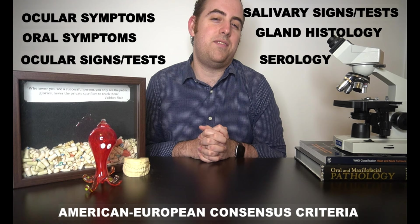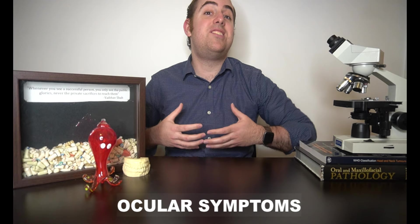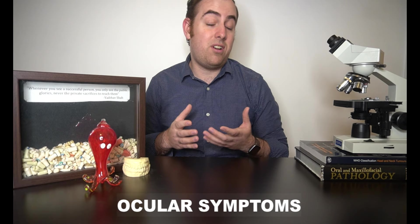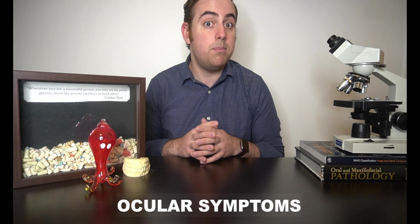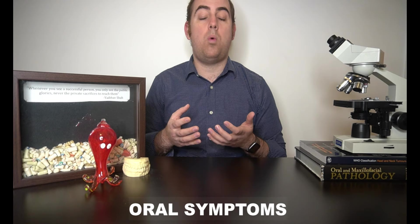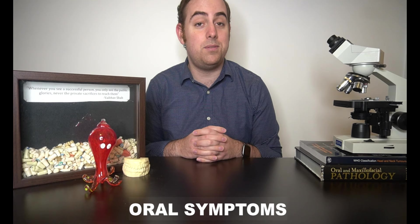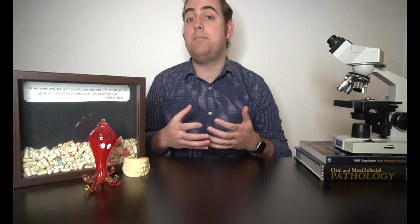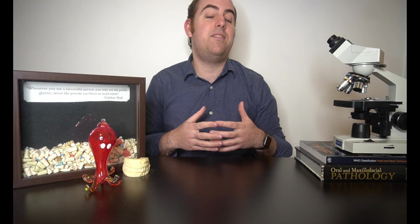The first category is ocular symptoms which is a subjective finding where the patient is describing their experience. Do the patients feel that their eyes have been dry for more than three months or have they used excessive amounts of tear substitutes? The second category is very similar but it is oral subjective symptoms. Similarly, has the patient had a dry mouth for more than three months? Or are they drinking excessive amounts of water or using excessive amounts of salivary substitutes? These subjective findings based on the patient's description of their symptoms and their experience are considered alongside the remaining objective or measurable findings.